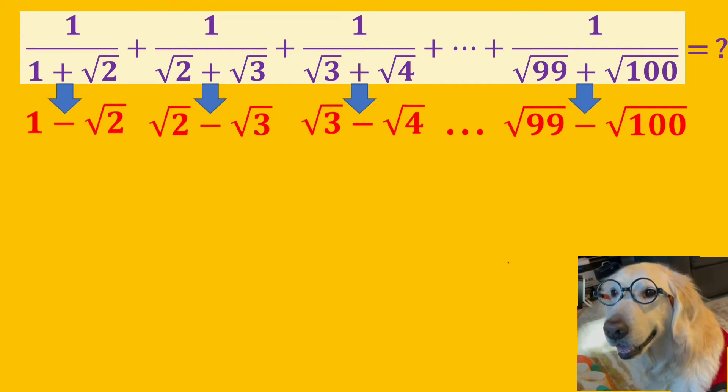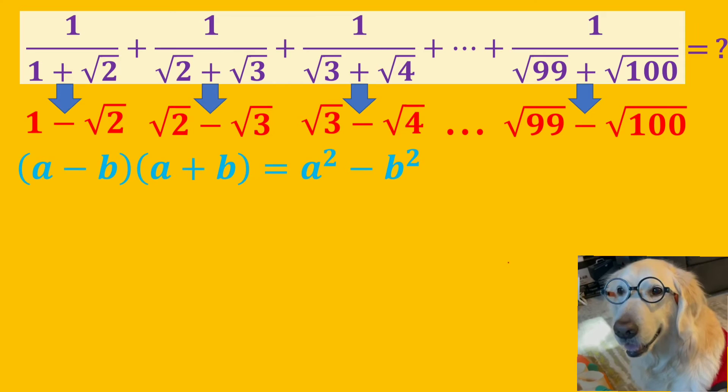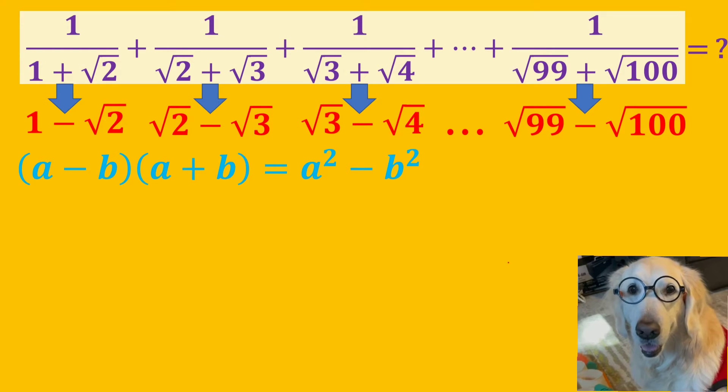For each fraction here, we will multiply both the numerator and the denominator by the conjugate of the denominator. The product of the conjugates is equal to the difference of the squares of their terms.